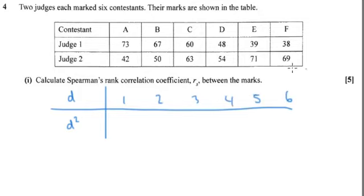But then you've got to remember to do the same thing for the second set of values. So we're going from biggest to smallest. So that's E first, so that's a 1 there. Then F, C, D, B, A.